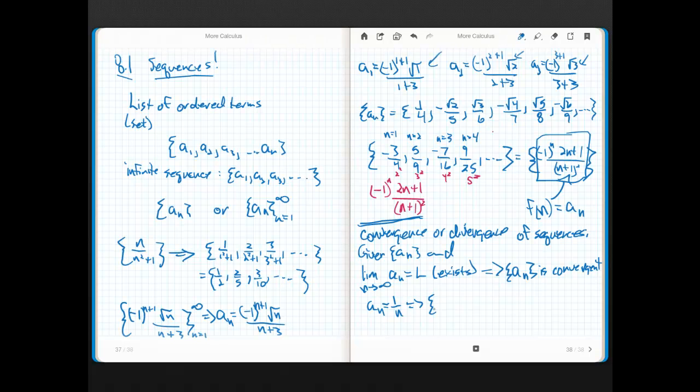The easiest one to think about is, think of this. Let a sub n equal 1 over n. This implies that a sub n is equal to what? It starts at 1, then a half, then a third, then a fourth, et cetera, et cetera. Well, what's it head for? Well, the limit as n goes to infinity of 1 over n is equal to 0. Therefore, it converges. I will use this circled C to denote convergence.